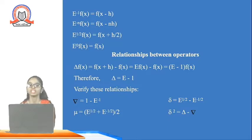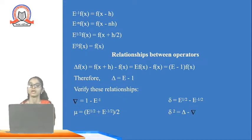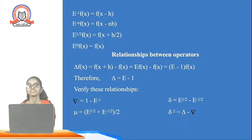Relationships between the operators: starting from the forward difference operator, delta f(x) = f(x + h) − f(x). But f(x + h) is the shift operator E f(x), so delta f(x) = E f(x) − f(x) = (E − 1) f(x). Therefore, the relationship between the forward and shift operator is: delta = E − 1.